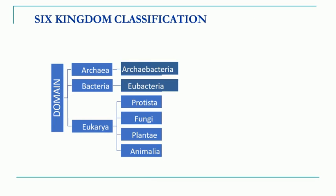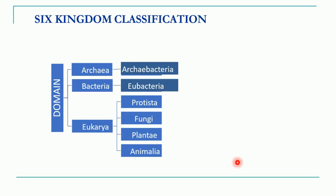With this diagram we will see the six-kingdom classification. As you remember, in the Whittaker five-kingdom system there was kingdom Monera, Protista, Fungi, Plantae, and Animalia. Now this Monera kingdom of Whittaker is being divided into two separate kingdoms — that is kingdom Archaebacteria and kingdom Eubacteria. So this was the addition made by the six-kingdom classification system by Woese.